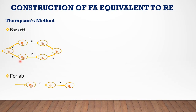For a plus b — that is, union in regular expression — a plus b corresponds to an NFA. We have states Q1, Q2 going on a, and Q3, Q4 going on b. A plus b is a union, and we connect them with epsilon transitions. This is the Thompson method for union — a plus b gives the corresponding NFA.